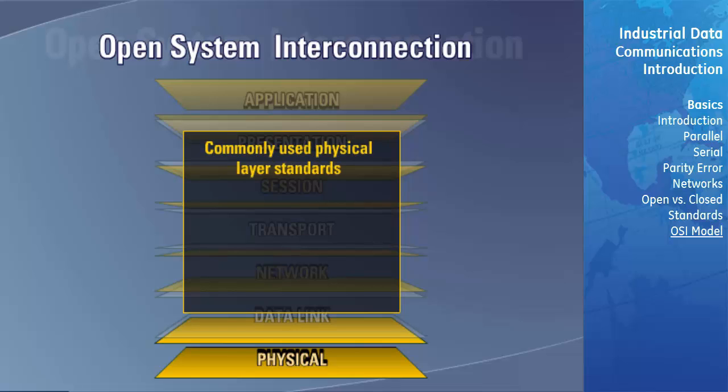In utility and industrial power system applications, the most commonly used physical layer standards are RS-232, RS-423, RS-485, 10/100BASE-T, and 10/100BASE-F Ethernet. We will learn about these standards in depth in the following sections of this course.